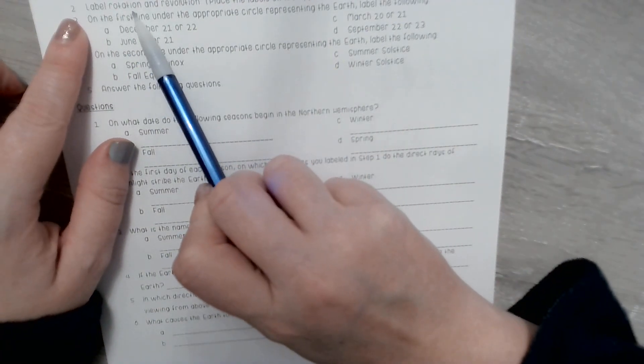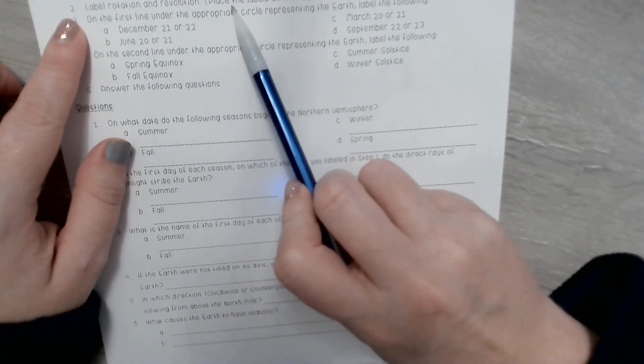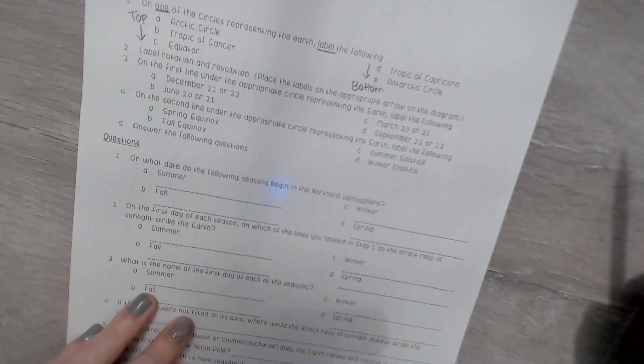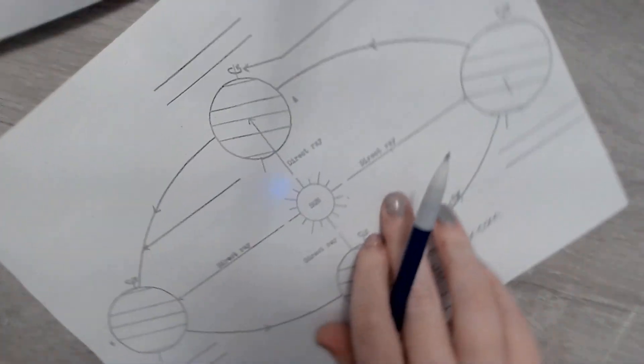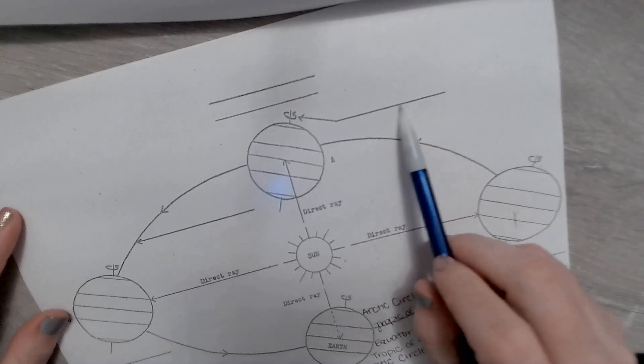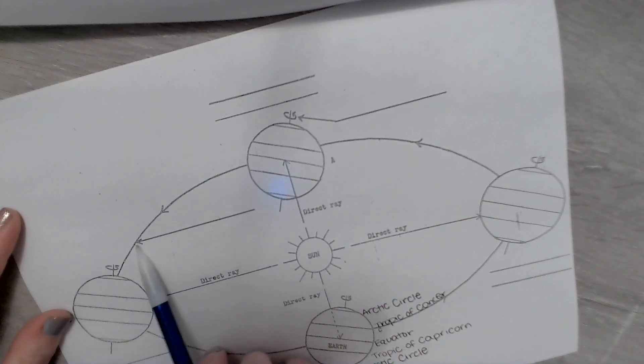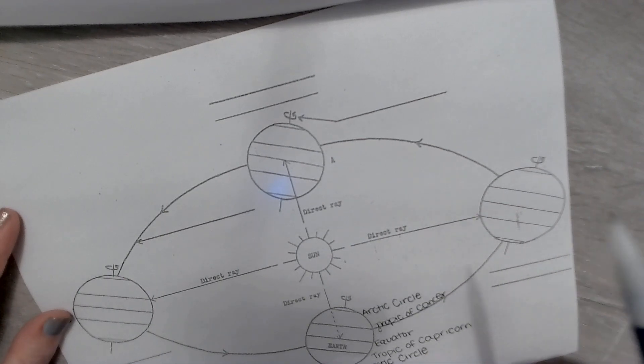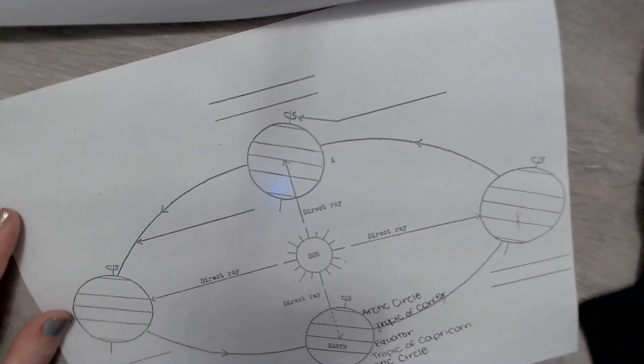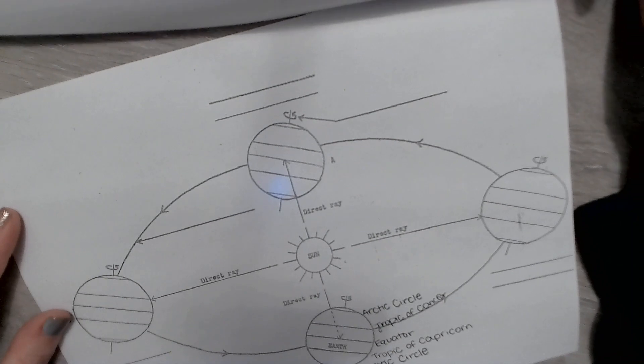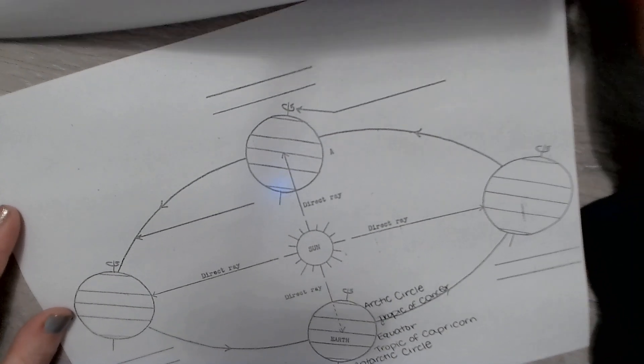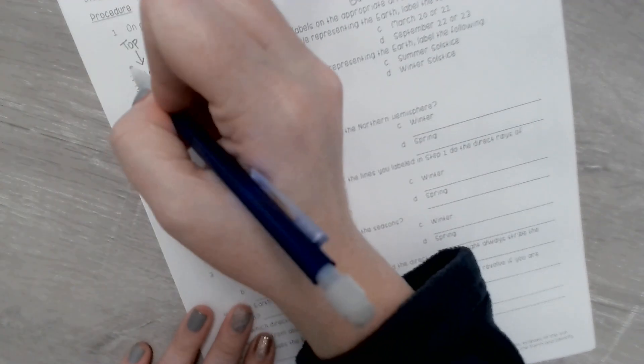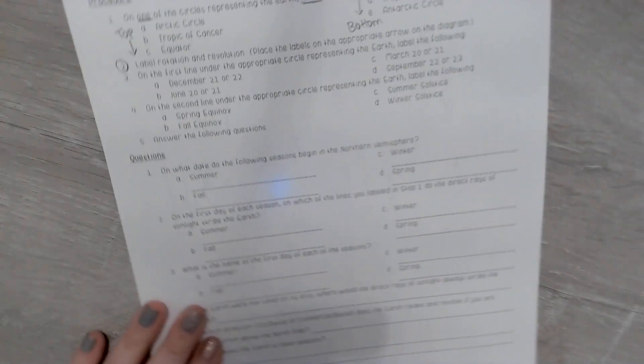Number two: label rotation and revolution. Place the labels on the appropriate arrows in the diagram. What that means is you have this random label and this random label. Which one is rotation, which one is revolution? I'm not going to label that for you because that's a big thing you need to know. So you need to come back and complete question number two.